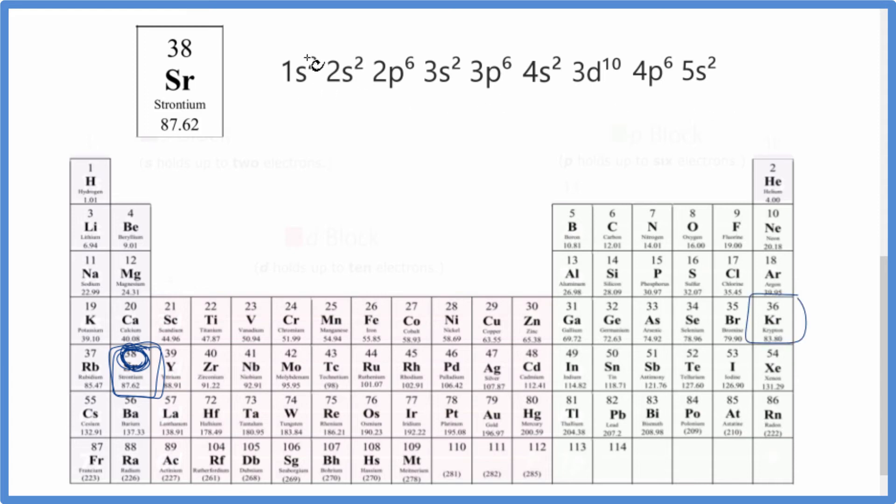So we count off 36 electrons here, that's 36, so that would be krypton. So we just write Kr, we put it in the brackets, and then we just put 5s2. That's the electron configuration in condensed notation for strontium.